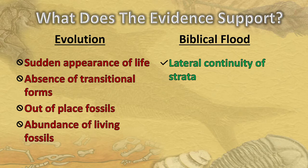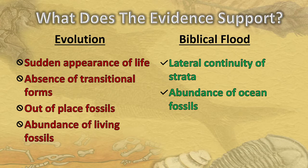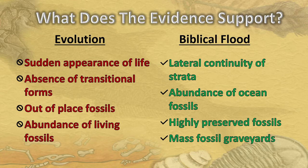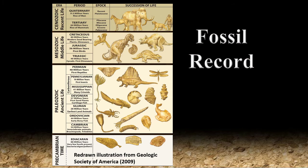Paleontologists have looked long and hard for transitional forms — they're simply not there. Instead, the fossils are strongly supportive of the biblical interpretation. There is a lateral continuity of strata — the layers of rock fossils are found in are horizontally traceable for hundreds, even thousands of miles. There is an abundance of ocean fossils showing that oceans inundated the land. We find fossils highly preserved, showing catastrophic burial, and mass mortality beds — mass graveyards of fossils. The fossiliferous strata make up a record, but not a record of life over hundreds of millions of years.